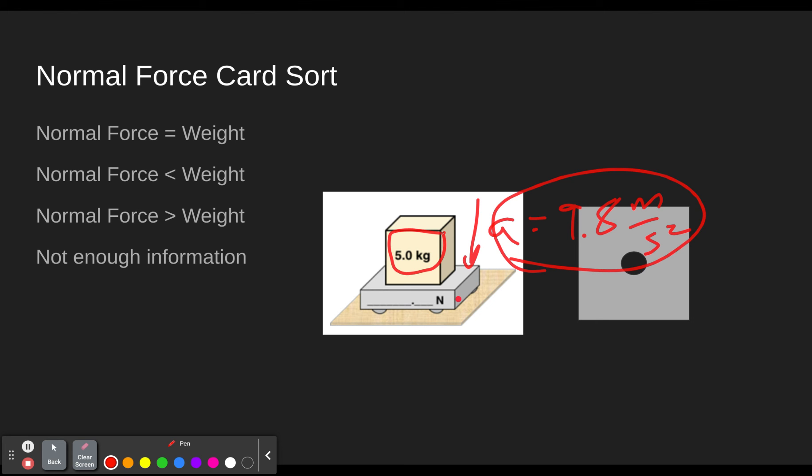Because if there was a force from the scale on the block, it wouldn't accelerate this fast. So since it's accelerating, that means that there's just the force of gravity on it, which means that this would actually read zero.